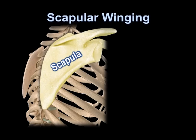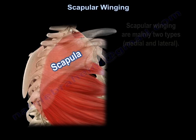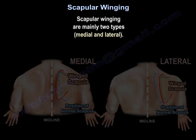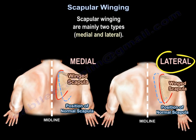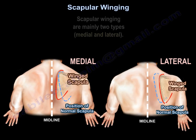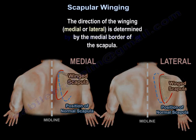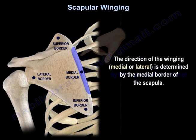Scapular winging is mainly of two types: medial scapular winging and lateral scapular winging. The direction of the winging, medial or lateral, is determined by the medial border of the scapula.